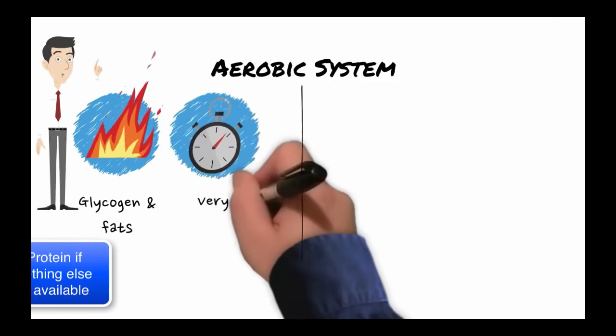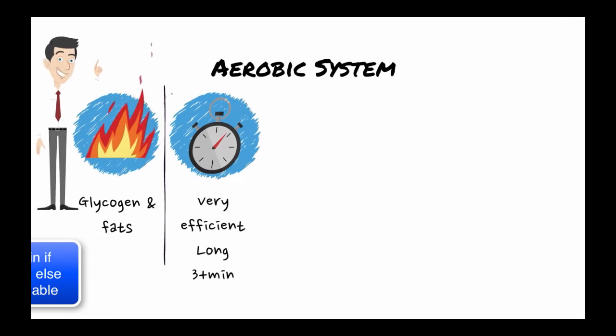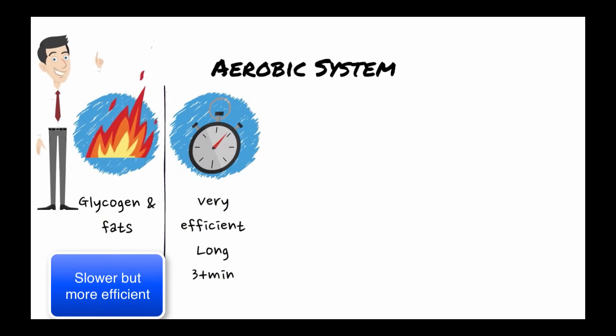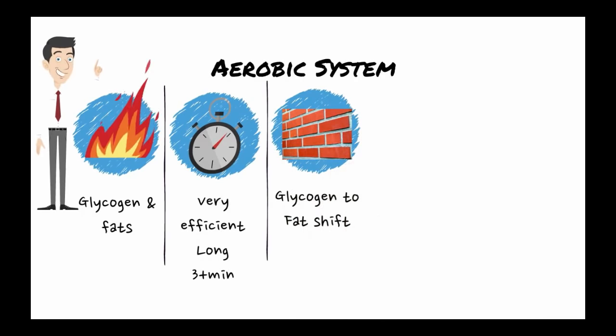The aerobic energy system uses glycogen and fats as its main source of fuel but can also use protein. It produces ATP at a slower rate than the anaerobic systems but can continue for a very long period of time.